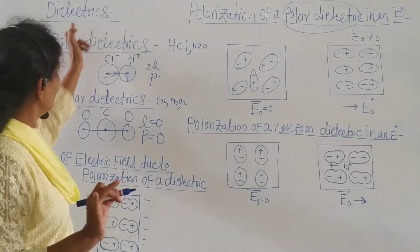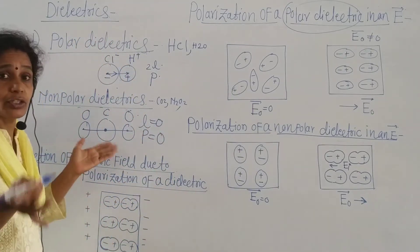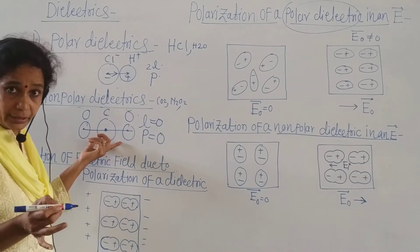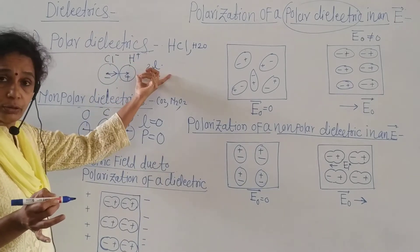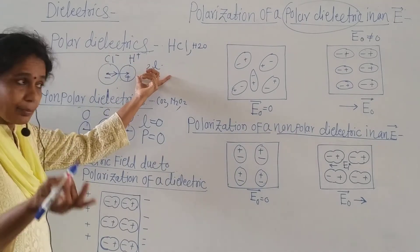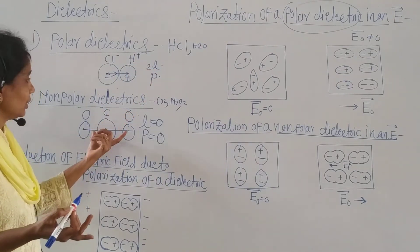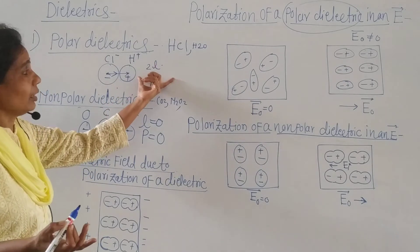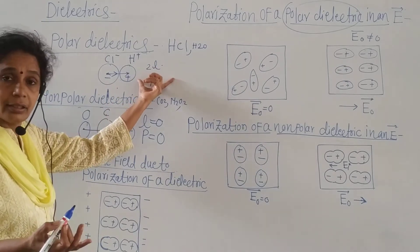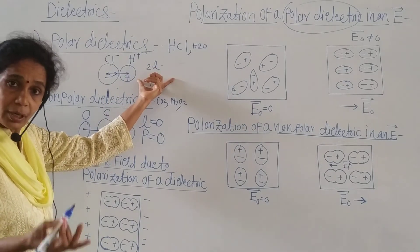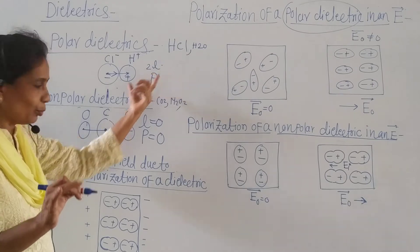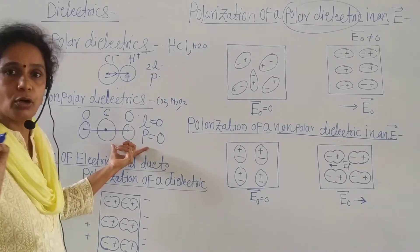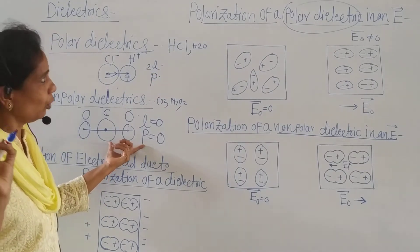Therefore, you can distinguish between polar dielectrics and non-polar dielectrics. Polar molecules have an asymmetrical shape and a permanent dipole moment, while non-polar molecules have a symmetrical shape and zero dipole moment.